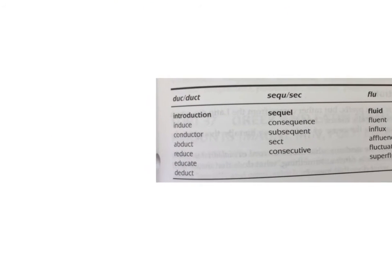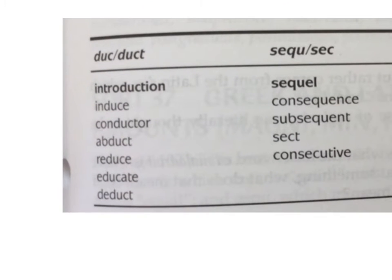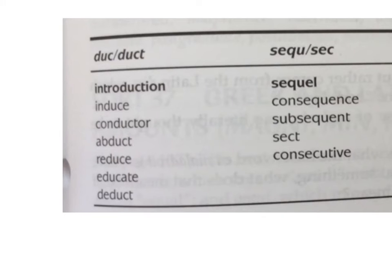Here is your sort. Let's go through one at a time. The DUC ones, which means 'lead': you have 'introduction,' so you're leading someone to someone else. 'Induce' is like you're leading someone into something — like in medical stories, 'induce a coma,' they're leading someone into a coma. 'Conductor' is the person who leads the train. 'Abduct' — you're leading someone away. 'Reduce' — you're taking stuff away, leading someone away from things. It's kind of tricky to get directly back to the word 'lead.'